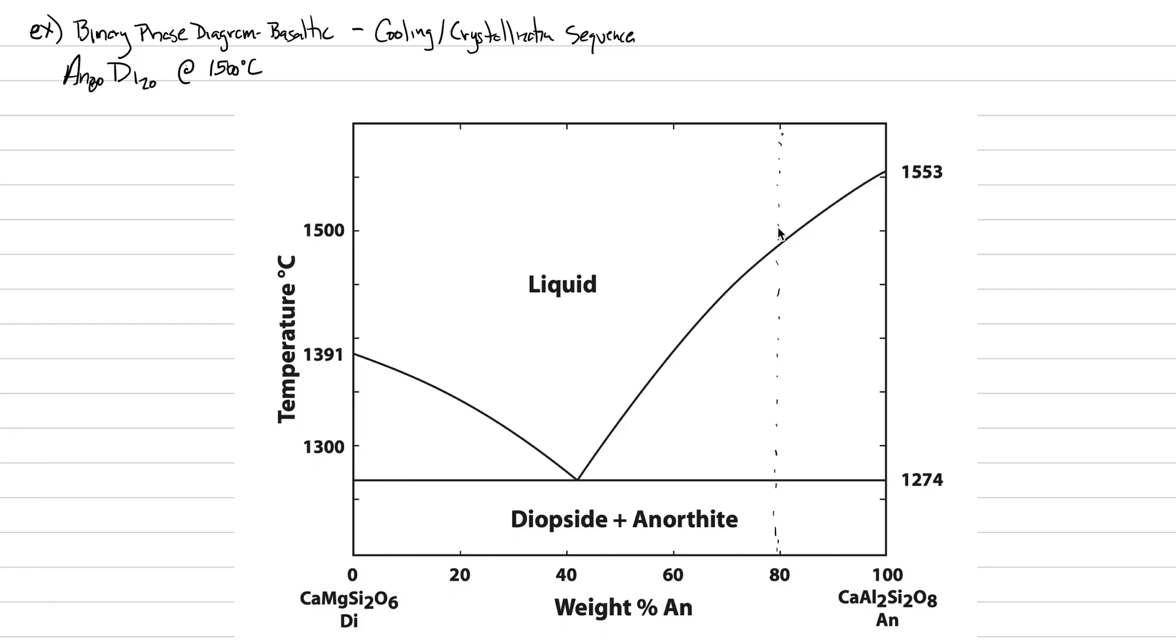Let's change that to 1560. So there's our starting conditions of our magma. As we cool this magma down to room temperature, it's going to sit in this liquid domain, and the very first crystal that forms will form right here at about 1470.